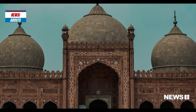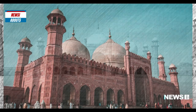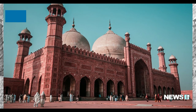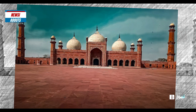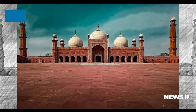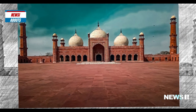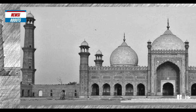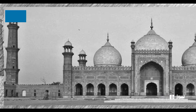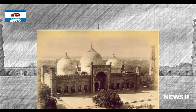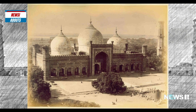In 1947, following the partition of India and Pakistan, the mosque became a symbol of the newly formed Islamic Republic of Pakistan. It underwent another restoration in the 1950s and 1960s, during which several changes were made to the mosque's design and structure.